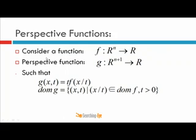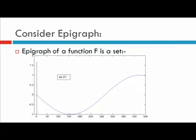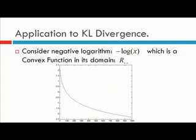Finally, what we are concerned with is: if the original function f is convex, then its perspective function will also be convex. Now let's return to the Kullback-Leibler divergence. What we have established up to this stage is that under perspective transformation, convexity is preserved.